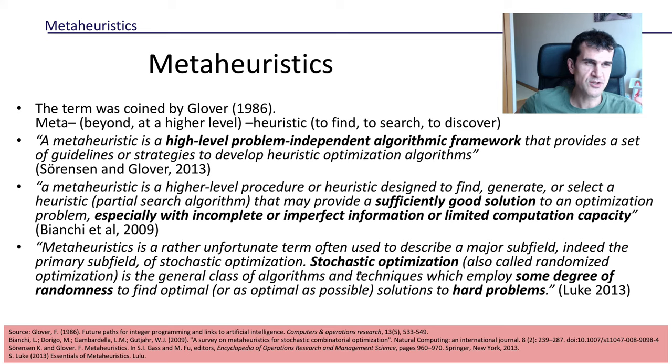All these methods, what is true, is that they can be seen as part of a major field in optimization, which is stochastic optimization. Stochastic means that we are going to use some random component—it is not deterministic. So we're going to use some randomness in order to try to find a good solution to very hard problems.